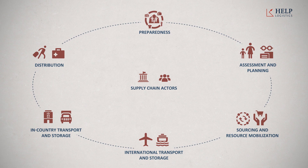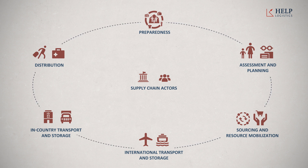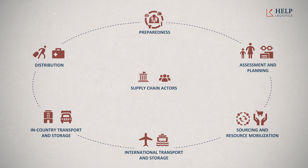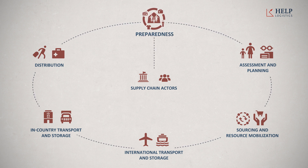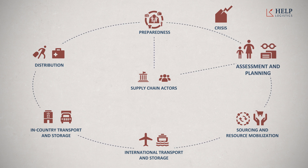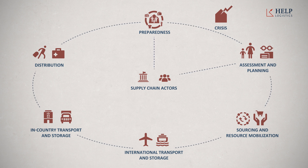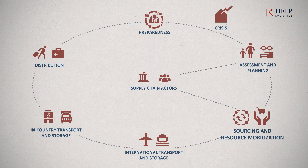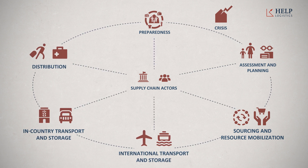Supply chain and logistics is the backbone of humanitarian operations to ensure affected people survive and receive relief assistance. In the humanitarian context, the supply chain includes different phases, starting with activities to build resilience, strengthen capacities, and prepare for future operations. When a disaster strikes, the assessment and planning phases determine the humanitarian program that needs to be carried out. The actual operation phase begins through the mobilization of resources and sourcing of commodities which are shipped and distributed to the affected population.